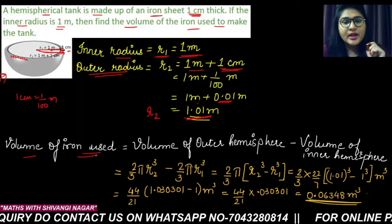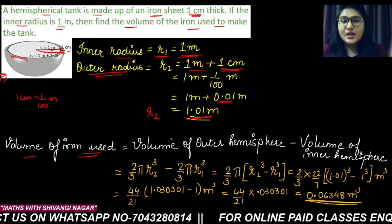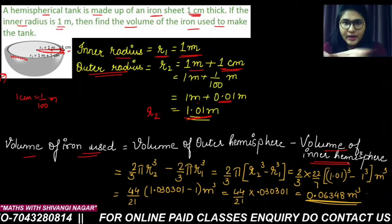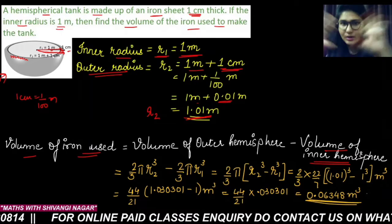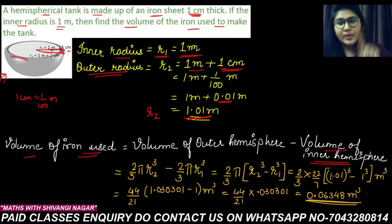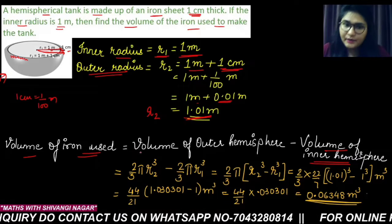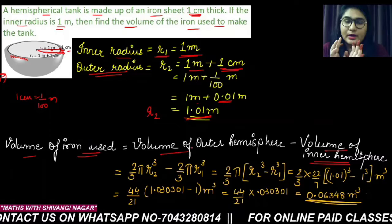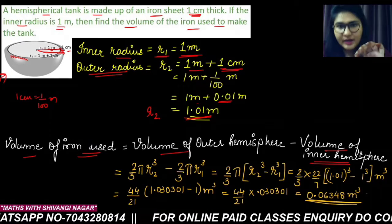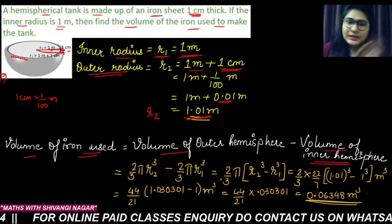So how to work on it? See students, if you eliminate the volume of the inner hemisphere—both outer and the inner part, inner empty part is also of the hemispherical shape—so if you find the volume of the inner hemisphere and you eliminate it from the volume of the entire outer hemisphere, what you will get? You will get that only part where the iron material is used to make that hemispherical bowl or hemispherical tank, right? So the same thing we have to do here.